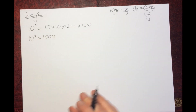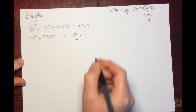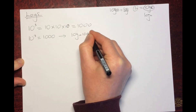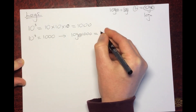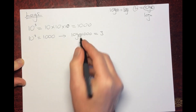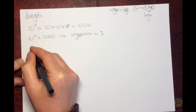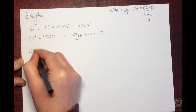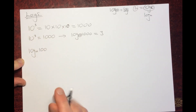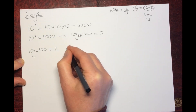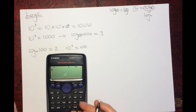What do these logs mean? Well, if we've got 10 to the power of 3 and we do log to the base 10 of 1000, what we're essentially asking is: what power do we have to raise 10 to in order to get 1000? The answer is 3. Similarly, log to the base 10 of 100 gives you 2, because you need to raise 10 to the power of 2 to get 100.